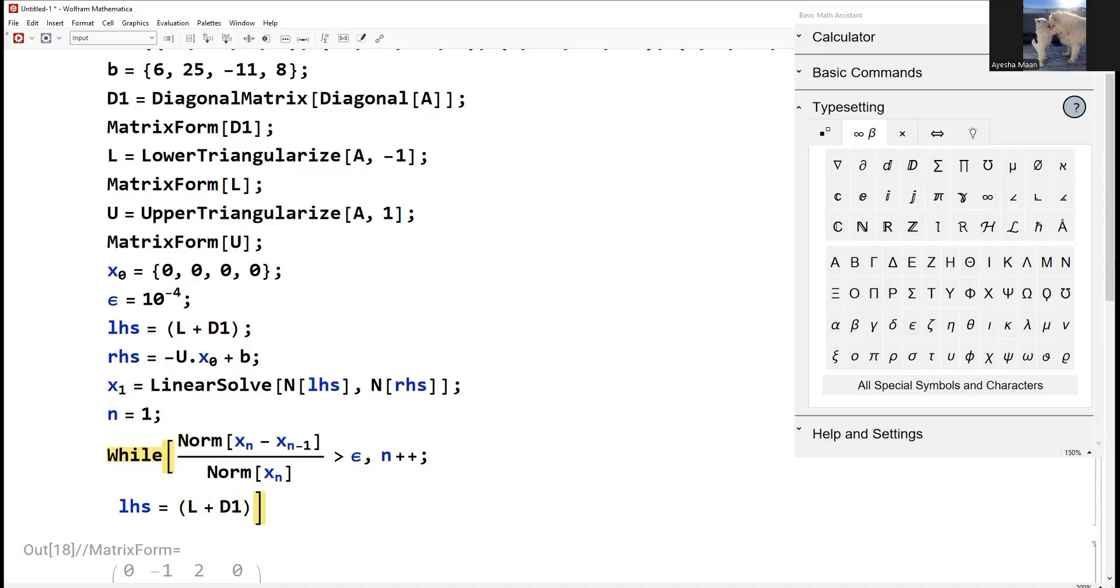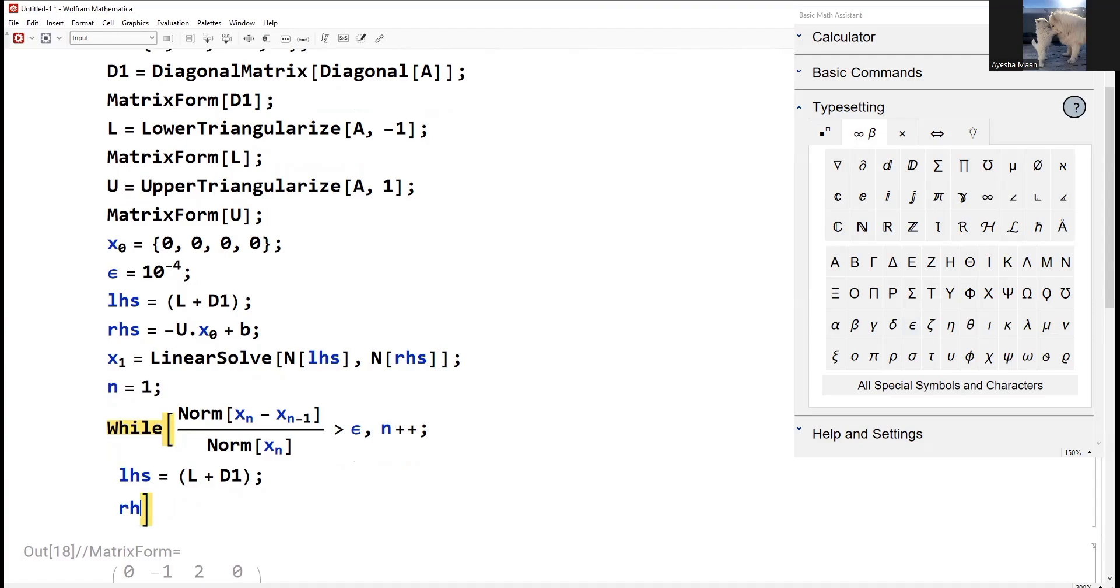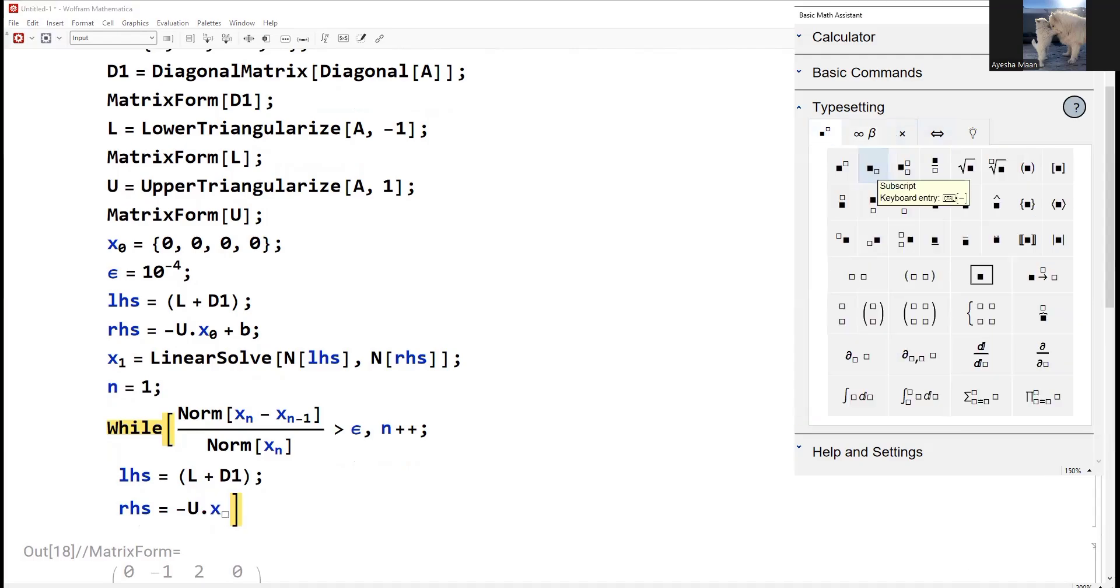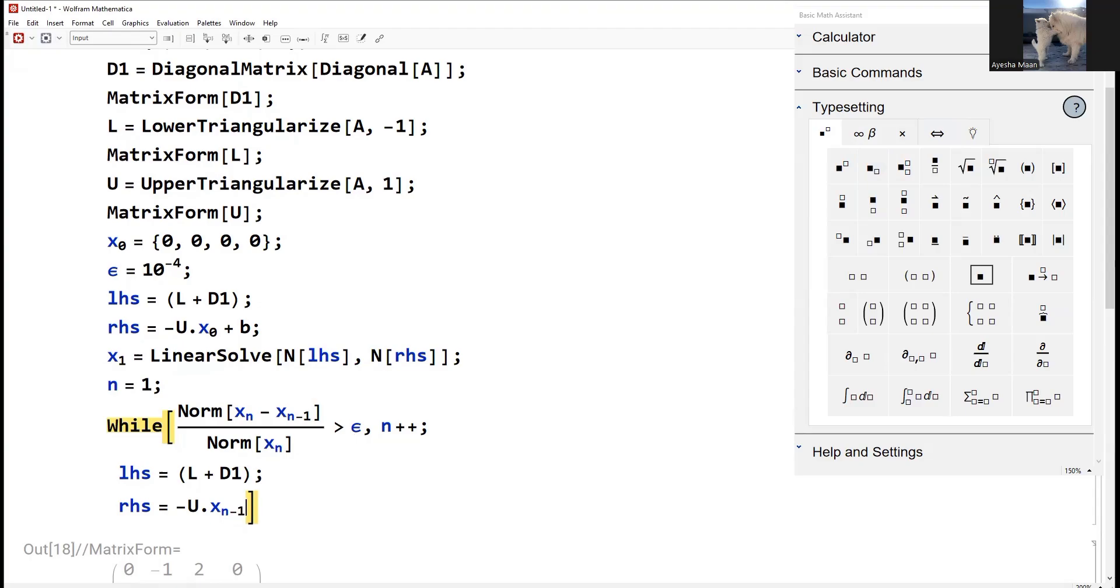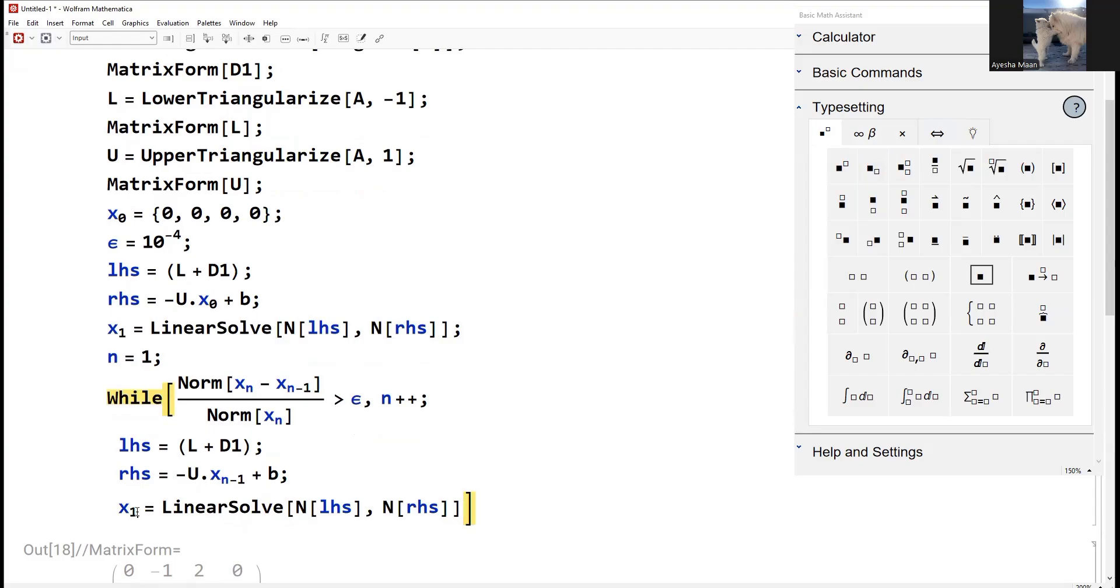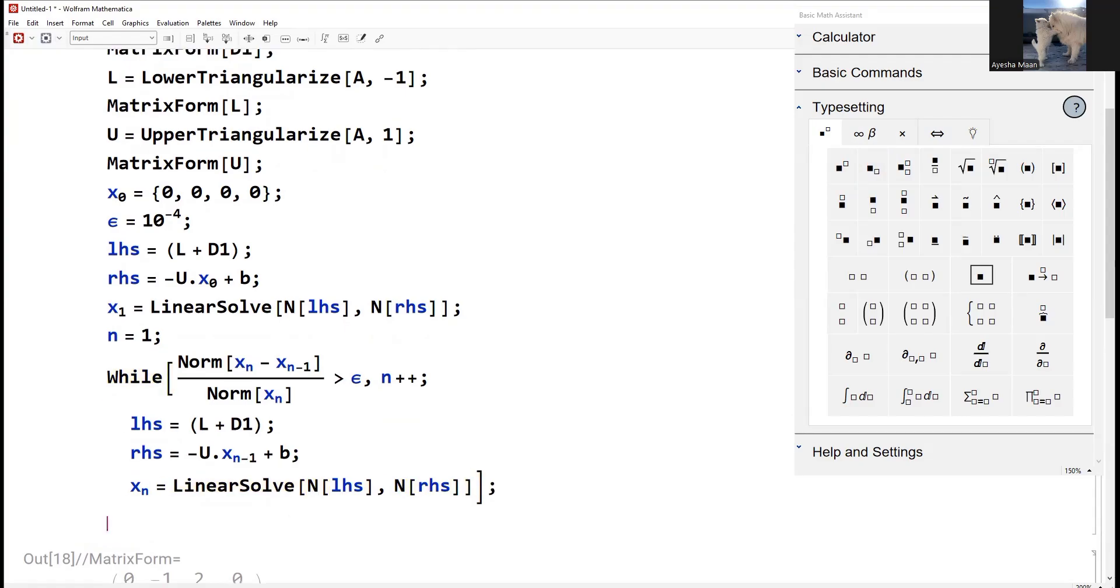We will take L capital. Next, right hand side equals minus U dot x_{n-1} plus b. Now we will use this term. I will copy paste it again because it is the same. We will take x_n. This will be our loop close.